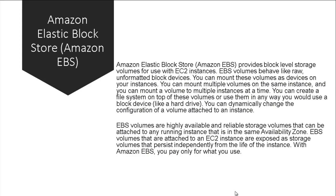Amazon Elastic Block Storage EBS provides block-level storage volumes for use with EC2 instances — this is only used by the EC2 instance. EBS volumes behave like raw unformatted block devices, just like a new raw hard disk you buy from the market with no file system. So an EBS volume is just like a raw, unformatted hard disk.